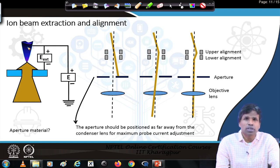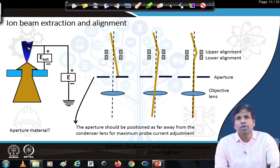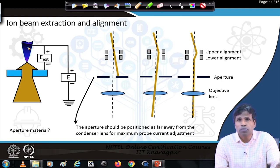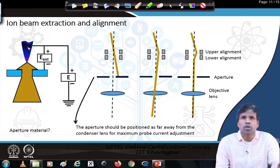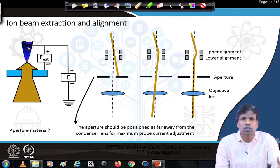The extraction voltage plays an important role in ionizing the gases. If the extraction voltage is higher, field evaporation of atoms from the tip will occur — a higher voltage would pull atoms from the surface of the tip. If we apply a lower extraction voltage, then the voltage is not sufficient to ionize the gas atoms. So an optimum voltage must be applied so that it can efficiently ionize the gas atoms at the apex of the ion source and then pull them downwards.